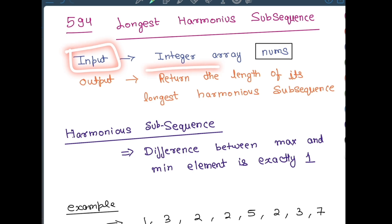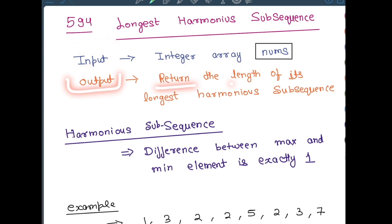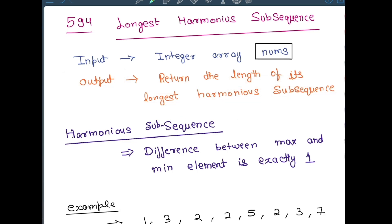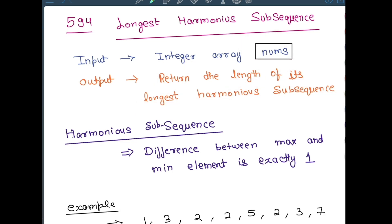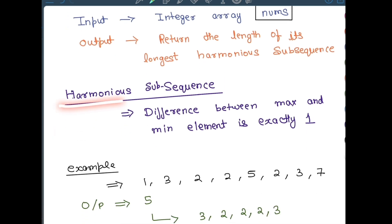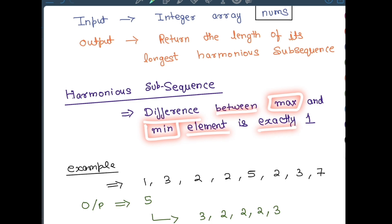The input given in the problem is an integer array nums and the output we need to give is we need to return the length of its longest harmonious subsequence. That is, we need to find the longest harmonious subsequence in our given array nums and return the length of it. A harmonious subsequence is an array in which the difference between the maximum element and the minimum element is exactly one.